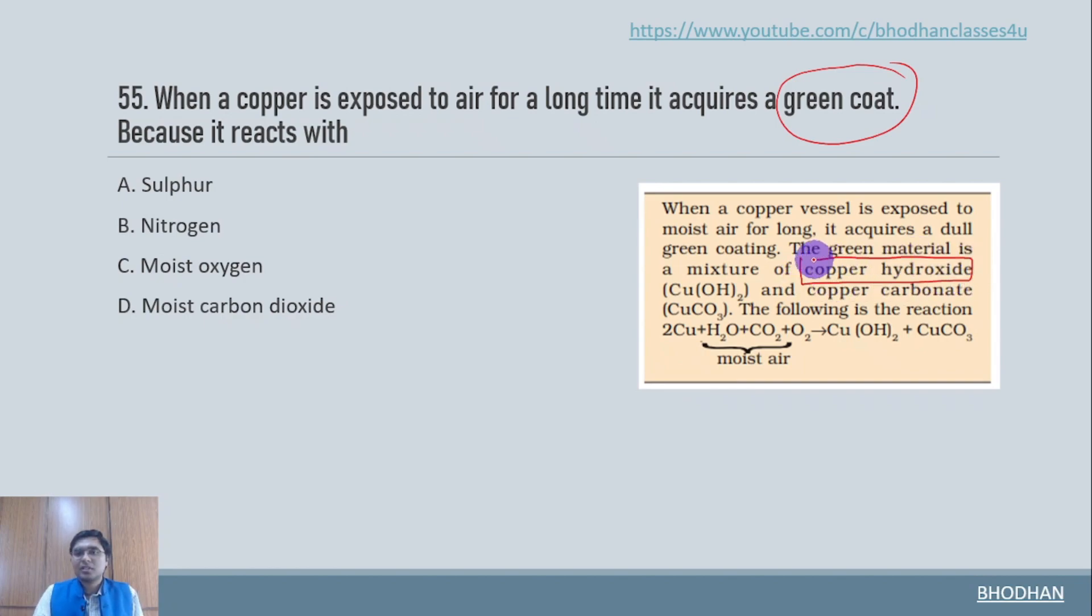The mixture here is copper hydroxide and copper carbonate. Copper hydroxide and copper carbonate are formed when copper is exposed to moist air. So what do you mean by moist? Moist is basically in the presence of water and not only water, in air we will have carbon dioxide, CO2. When all three of them react, we get a mixture which is basically copper hydroxide and copper carbonate. This mixture is responsible for the green coating. So here moist carbon dioxide is the correct answer.